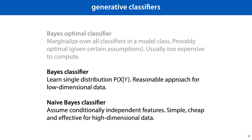There are a few different approaches to learning generative classifiers. The Bayes' optimal classifier marginalizes over all classifiers in a model class. This is a kind of provably optimal model, but it's usually too expensive to compute and we won't discuss it in this course — though it's important to know that it exists and means something different from these other Bayesian classifiers. The general Bayes classifier learns a single distribution for the data given the class, which is reasonable for low-dimensional data. For high-dimensional data, we often make the additional assumption that the features are independent conditional on the class — this is called a naive Bayes classifier, which is simple, cheap, and effective for high-dimensional data.